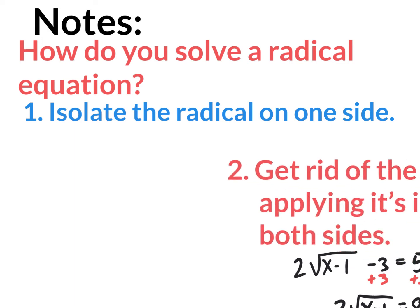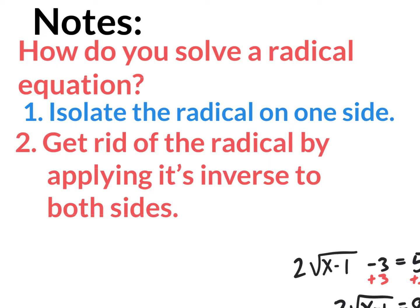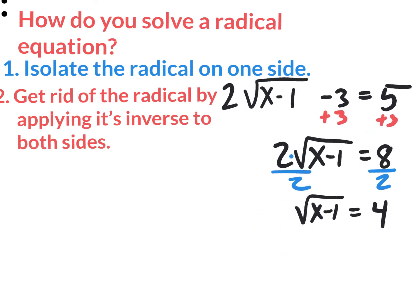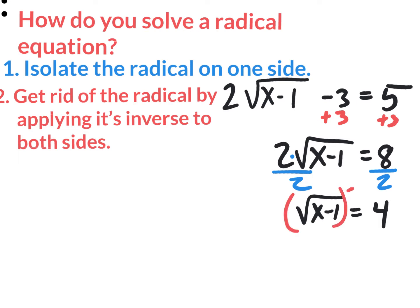Step 2: once you isolate that root, you're going to get rid of the radical by applying its inverse to both sides. To get rid of a square root, apply a square — the inverse of a square root. The inverse of a third root is a power of 3; the inverse of a fourth root is a power of 4. So here we have a square root, and we square both sides.